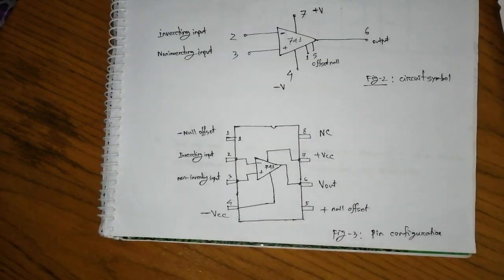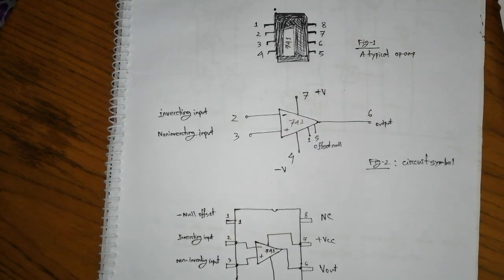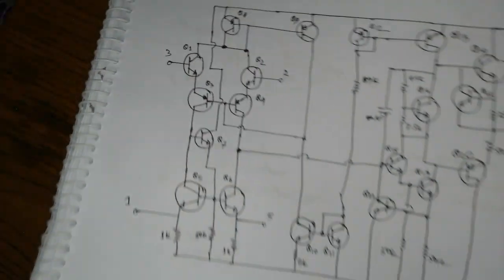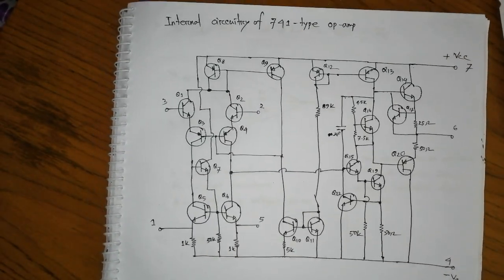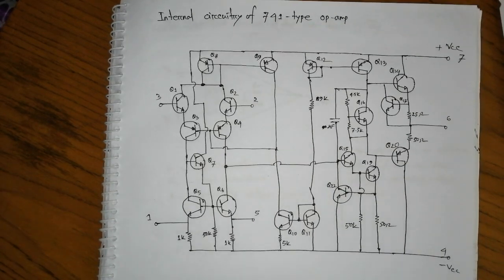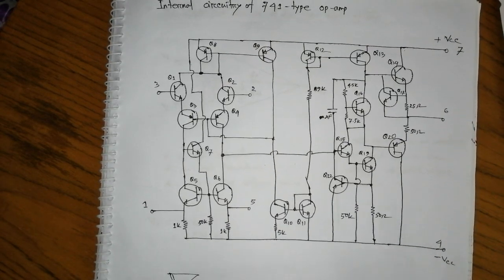Now we need to see the actual operational amplifier. This is the circuit symbol of the operational amplifier. This is also the internal circuit of the 741 type operational amplifier.